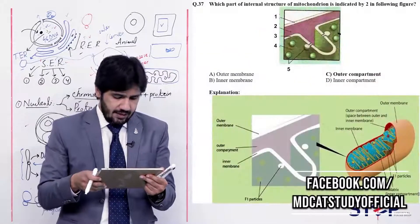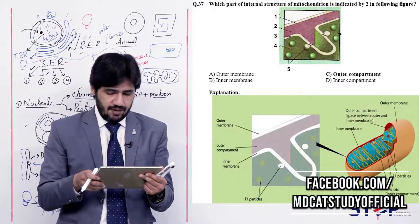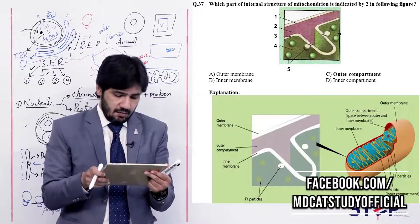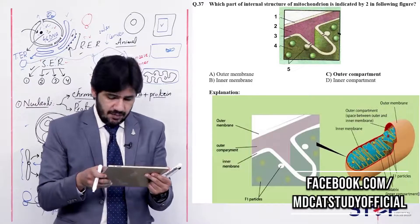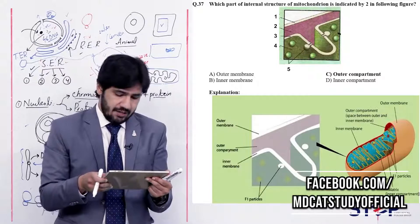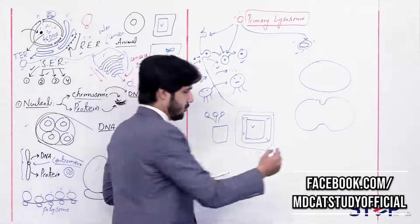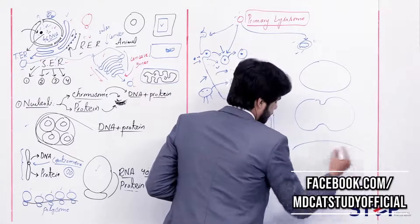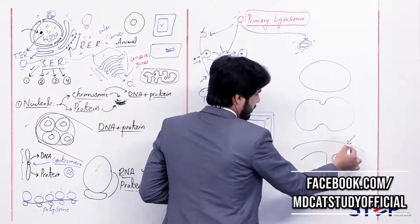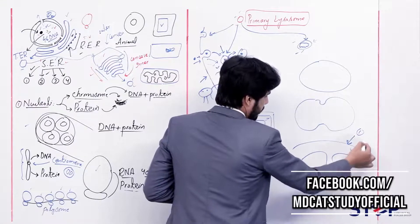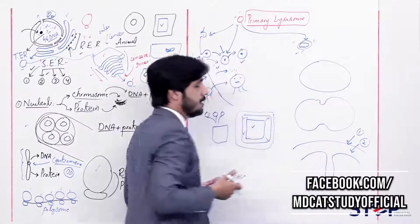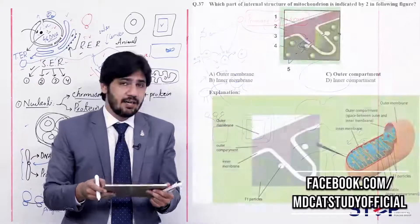Question 37: Which part of mitochondrion is indicated by point 2 in the diagram? (alpha) outer membrane, (beta) inner membrane, (charlie) outer compartment, (delta) inner compartment. In the diagram, point 1 indicates the outer membrane and point 2 indicates the space between the outer and inner membrane, which is the outer compartment (also called the intermembrane space). So the right answer is charlie — outer compartment.